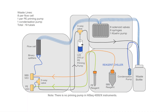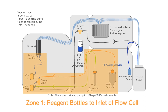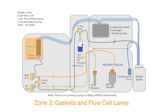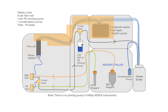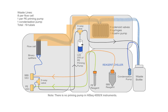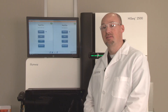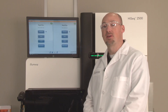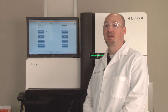To determine the location of the blockage, we investigate three general zones of the fluidics path. The first is from the reagent bottles to the inlet of the flow cell. The second zone is the gaskets in the actual flow cell lanes. The third zone is from the back or outlet of the flow cell to the syringes and out to waste. A good way to determine the location of your clog is to eliminate each of the three zones one by one as being a possible source.